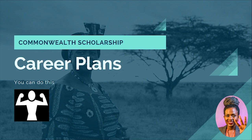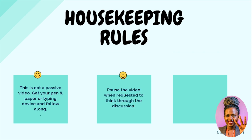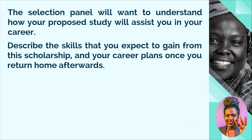We'll start immediately going through the career plan questions. As always, we have some housekeeping rules — this is not a passive video. Get your pen and paper or a typing device and follow along. Pause the video when requested to think through the discussion, and have a draft by the end of this video. Having bullet points while going through the questions will be very helpful as you structure out your own essay.